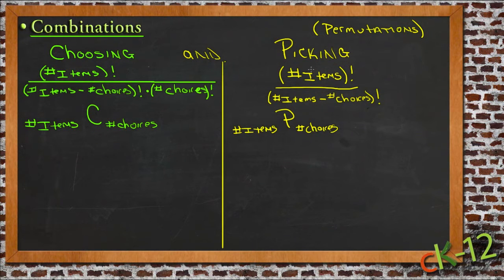The formula we use to find permutations is taking the number of items you're choosing from, finding the factorial of that number, and putting it in the top of a fraction. In the bottom, you take the number of items, subtract the number of things you're choosing, and take the factorial of that. When you do the division, you get the number of possible permutations.